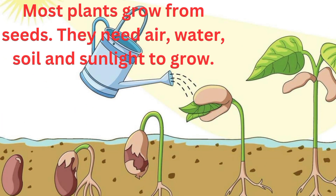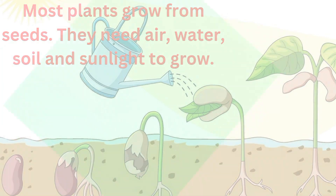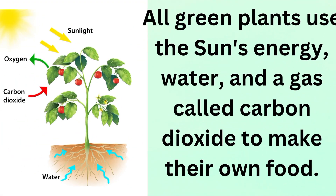Most plants grow from seeds. They need air, water, soil and sunlight to grow. All green plants use the sun's energy, water and a gas called carbon dioxide to make their own food.